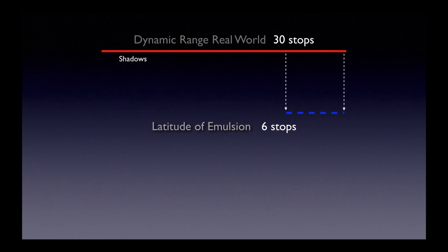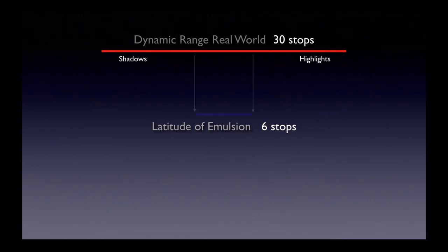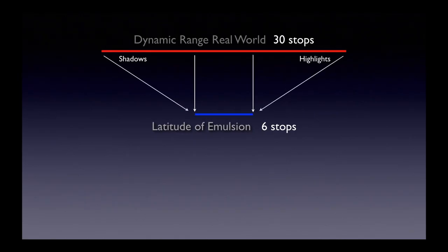If we slide our six stops of exposure latitude up to the other end of the scale, we've got all the highlights correctly exposed, but everything down the shadow end is just falling into black with no shadow detail at all. So the question is: how do we go about fixing that when the real world has 30 stops and our camera has a latitude of only six stops?